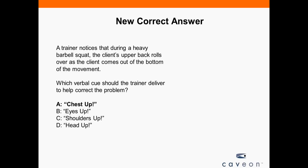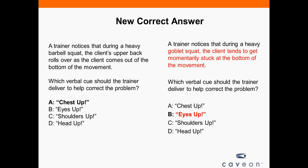The first strategy is changing the item so you get a new correct answer. Here's a sample item: a trainer notices that during a heavy barbell squat, the client's upper back rolls over as the client comes out of the bottom of the movement. Which verbal cues should the trainer deliver to help correct the problem? A: chest up, B: eyes up, C: shoulders up, D: head up. As a cloner, I'd look at the answers — are these all valid cues? Is it possible to change the stem to make one of the other answers correct without making all answers correct, while still supporting the objective?